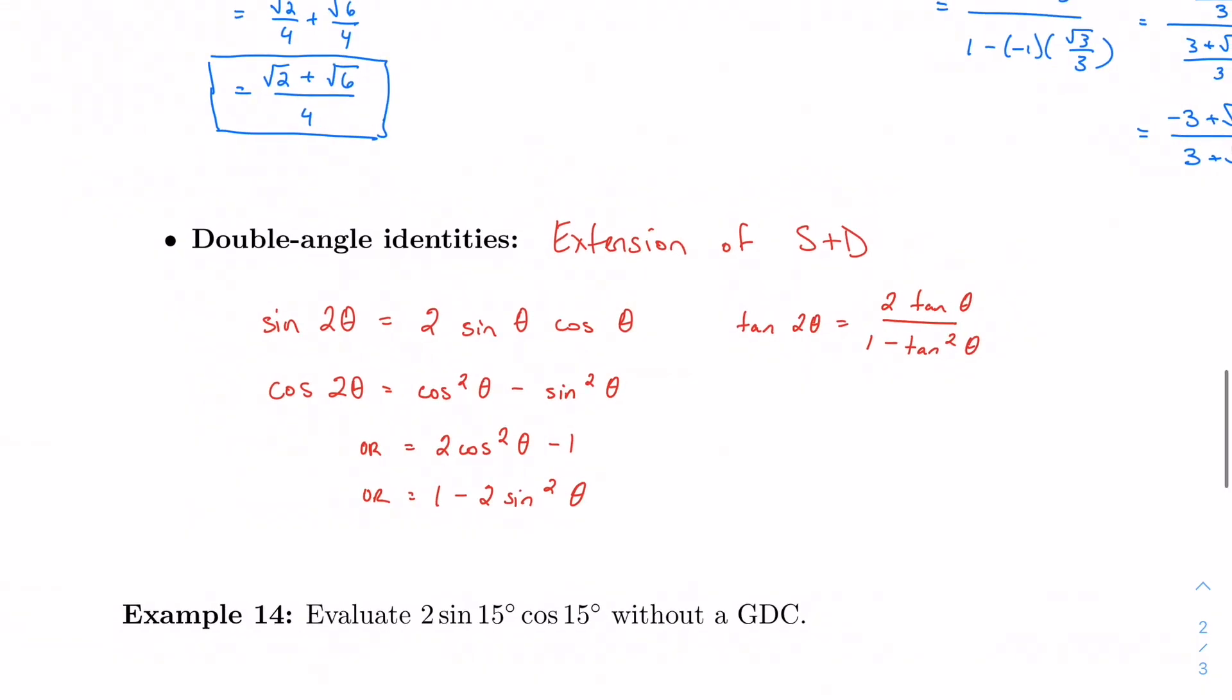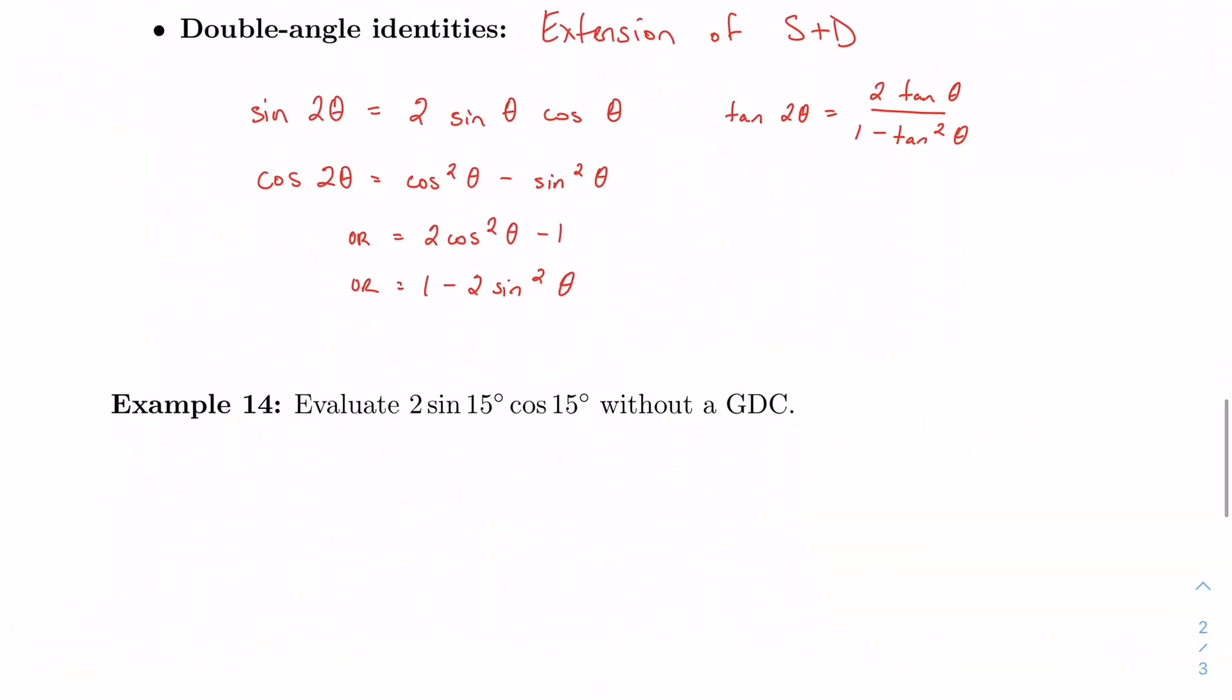So one quick problem with this. Evaluate this expression right here. And if your first thought is, I don't know what sine 15 is, and I don't know what cosine 15 is, that thought should be followed by, I wonder if there's a formula that I can use, an identity that I can use to simplify this. 2 sine cosine. Well, let's see. I have that right here.